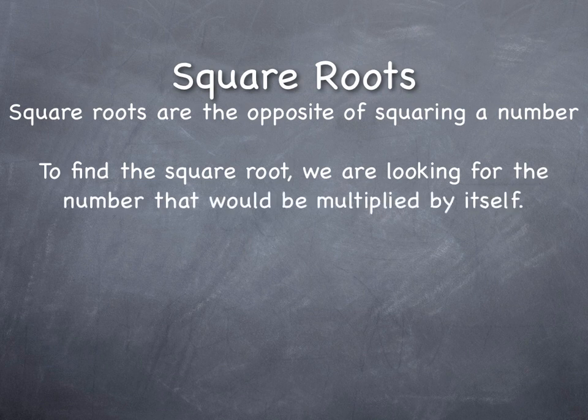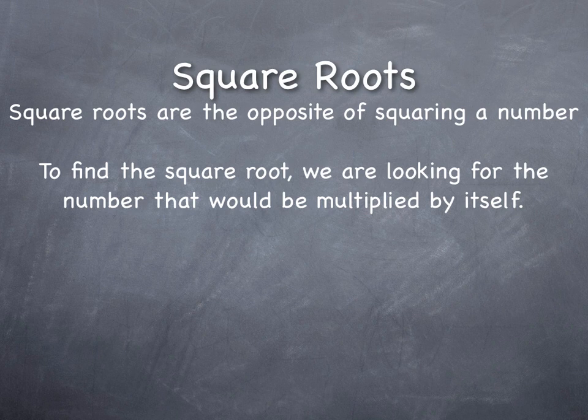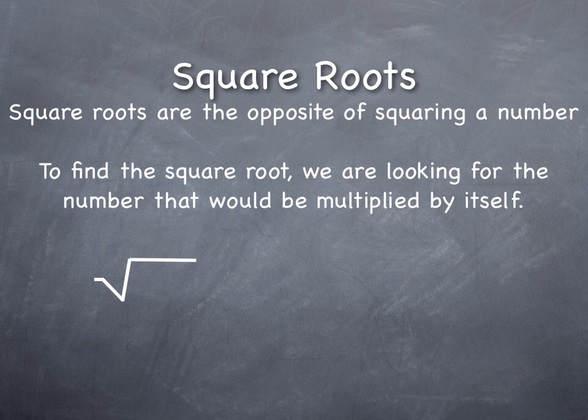To find a square root, we're looking for the number that would be multiplied by itself. We use a special sign to represent square roots—you may have seen this sign before. It looks a bit like a division sign but without the curve. It's a straight line, almost like a check mark with a long tail at the end.